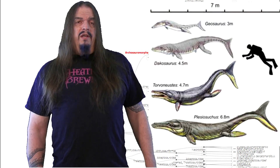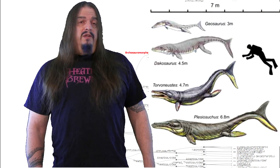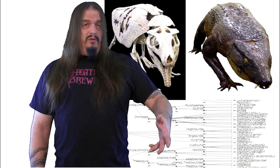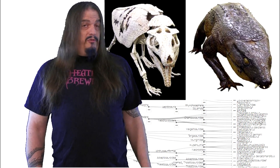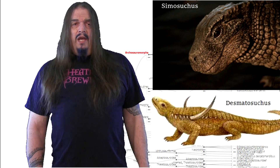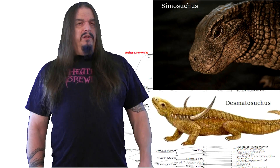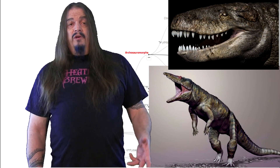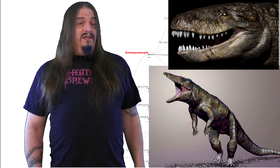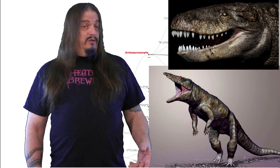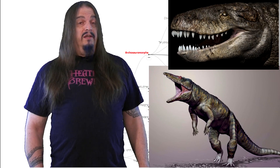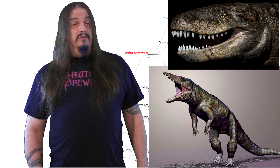The Crocodilomorph clan once included fully marine fish mimics, fully terrestrial armadillo mimics, plant eaters, and even arboreal tree-climbing predators, if you can imagine that. There were also some that walked on their hind legs, and of course those Crocodilomorphs looked an awful lot like the first dinosaurs.